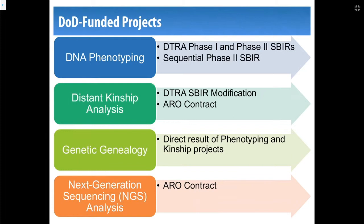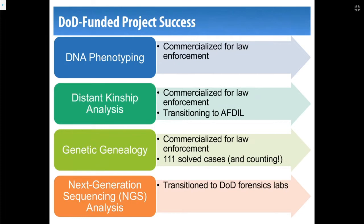We've done most of this work in collaboration with and with funding from the Department of Defense. It all started about 10 years ago with a Phase 1 SBIR from DITRA for DNA phenotyping. That has since spun out into a Phase 2, a sequential Phase 2, a modification, and a Phase 2 enhancement — a lot has followed from that original work because it's been so successful. It spun out into kinship analysis, first as an SBIR modification and then as another new contract. Genetic genealogy is not directly funded by the DoD, but it wouldn't be possible without all the work that went into developing the phenotyping and kinship project. And then the last project is next-generation sequencing analysis.